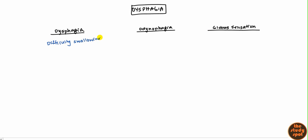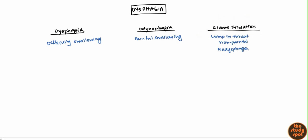On the other hand, odynophagia is going to be painful swallowing. And finally, we have globus sensation, which is just a feeling of a lump in the throat — I'm sure we've all had that when we're stressed out or under pressure. This lump in the throat has to be non-painful and there has to be no dysphagia associated with it. So when you ask questions, you've got to make sure you ask: is it painful? Because then that's odynophagia. If it's just a feeling of a lump in the throat but you're swallowing okay, that's globus. Swallowing is the key here.